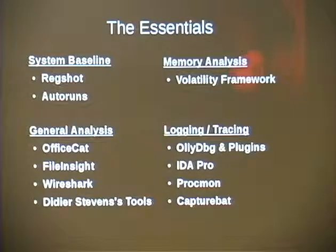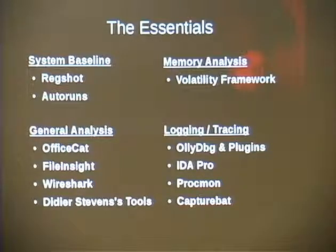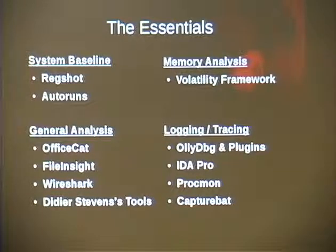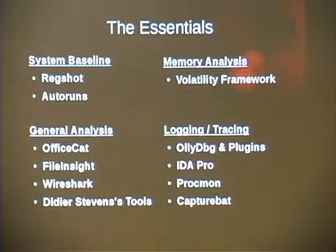To complete those steps, here are the essential utilities. For the system baseline — snapshotting what's going on in your system — I like to use Regshot and Autoruns. Regshot is basically a full registry dump of the entire computer, and it can optionally save a full listing of the file system. After you've run your malware, you run Regshot again, create another snapshot, and it does a differential analysis showing what changed in both the registry and the file system.